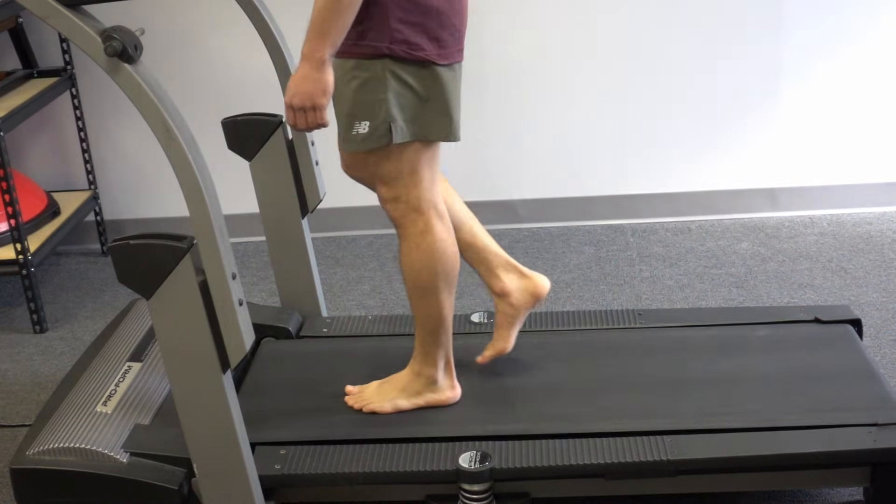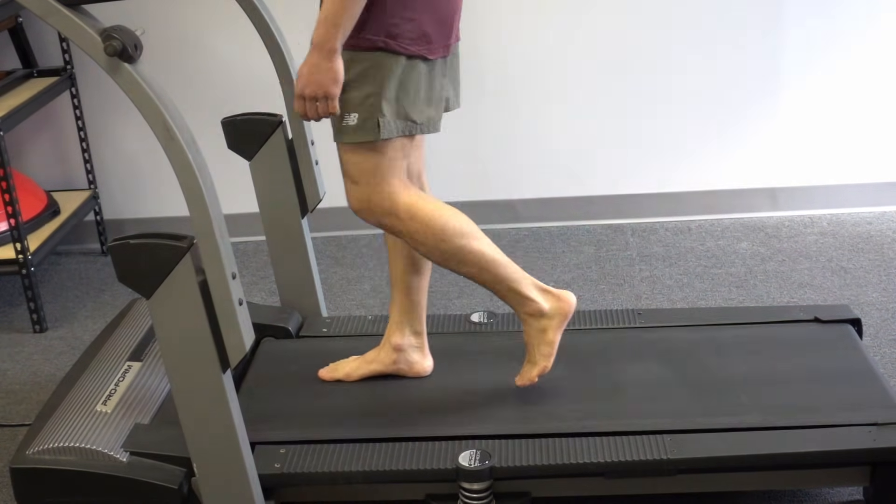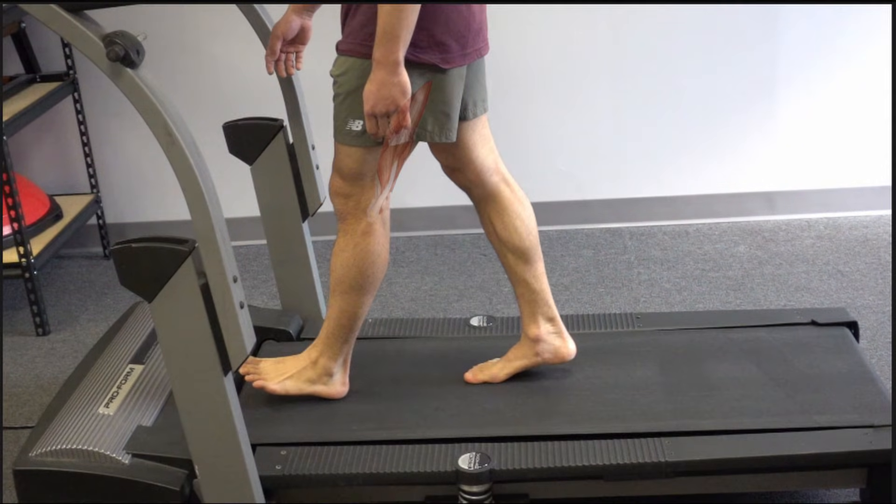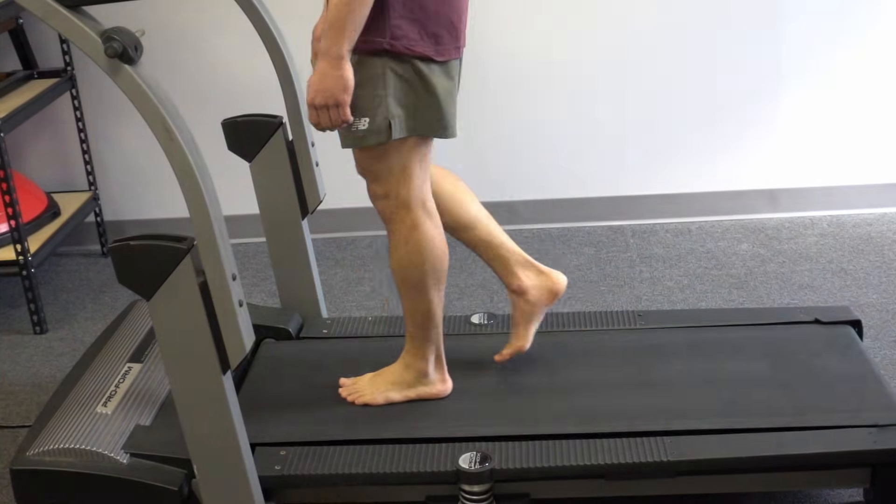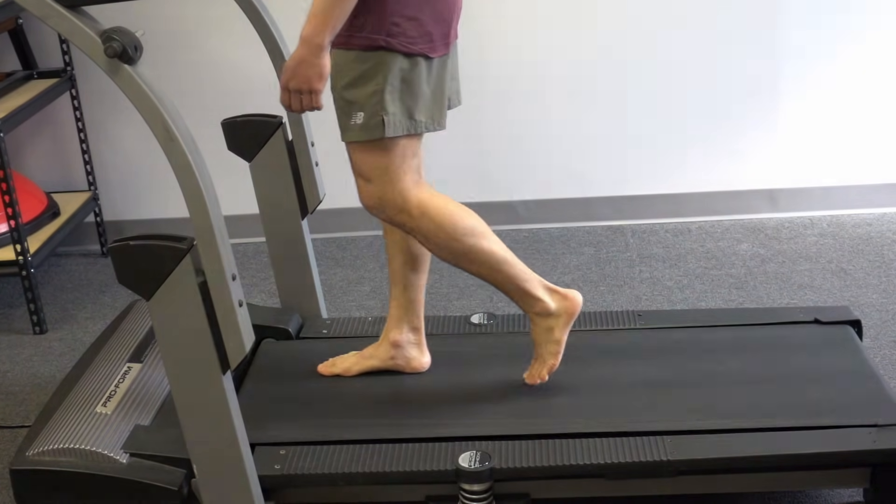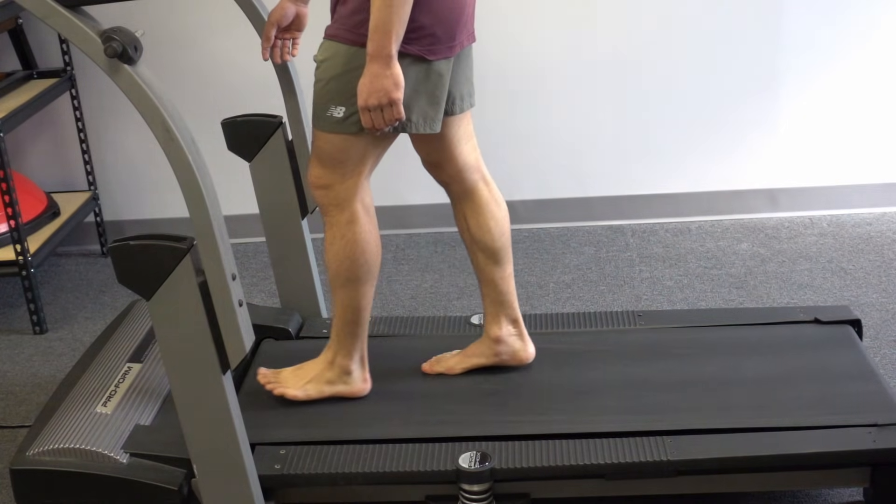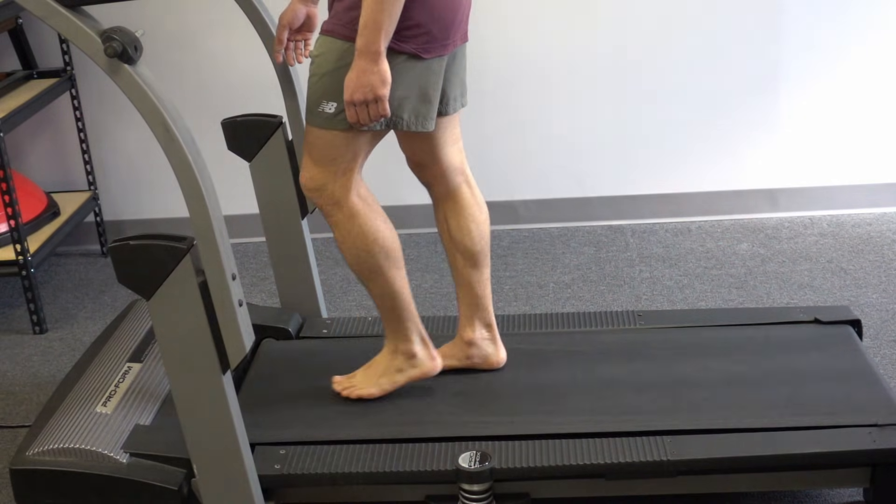During swing, our tibia has a great deal of momentum. The momentum needs to be slowed down prior to initial contact. This is the role of the hamstrings. Since momentum is carrying the knee into extension, the knee flexor muscles must contract eccentrically to slow that momentum down. So contraction of the hamstrings can be seen here during terminal swing.